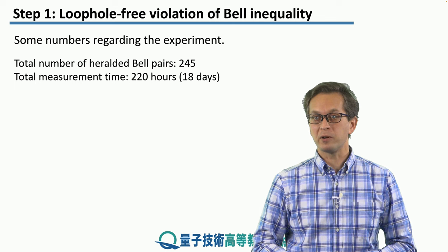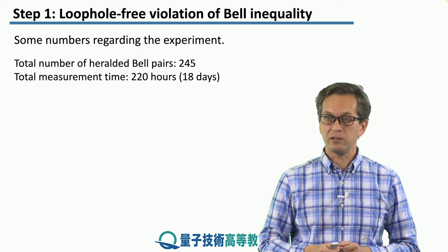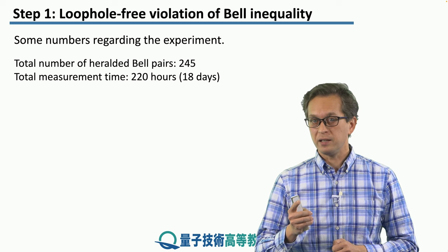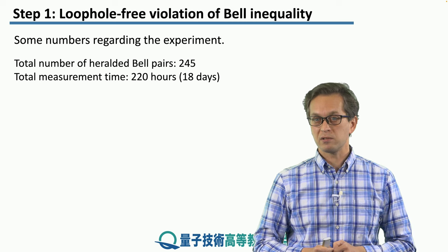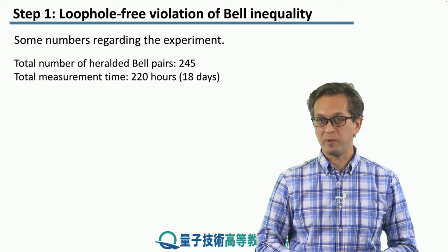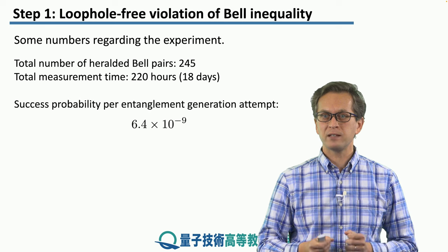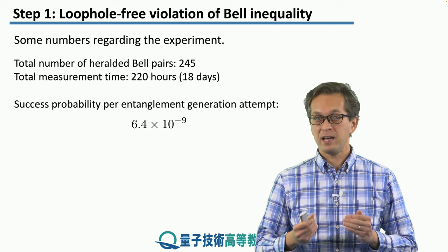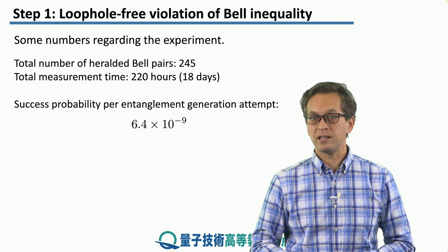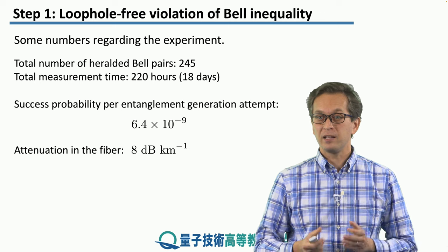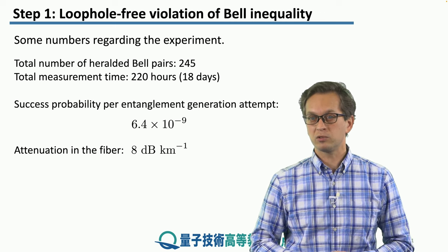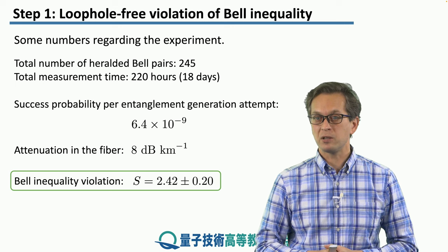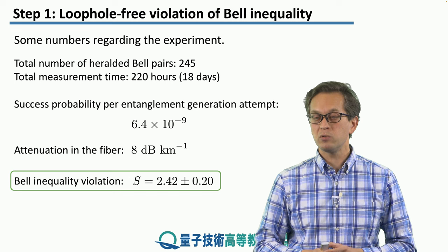Here are a few numbers of particular interest about this experiment. The total number of heralded Bell pairs generated during the run was 245 — but the entire measurement time was 220 hours. This is an incredibly long time to get only 245 Bell pairs, which shows just how difficult these experiments are. The success probability per entanglement generation attempt was 6.4 times 10 to the minus 9, meaning the experimentalists had to try many, many times to generate those 245 Bell pairs. The attenuation in the fiber was 8 dB per kilometer. Despite all these complications, the experimentalists were able to demonstrate a clear violation of Bell inequality, measuring S to be 2.42 plus or minus 0.2.